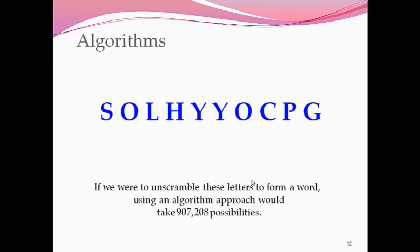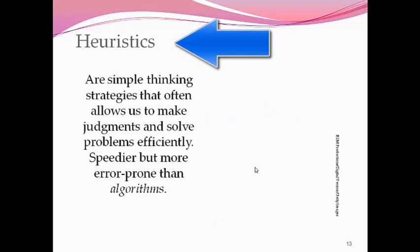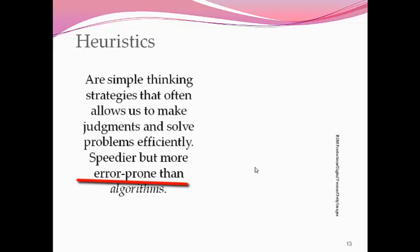So instead of using algorithms, human beings tend to rely on another problem-solving technique, another type of cognition or thinking strategy called heuristics. Heuristics are simpler strategies than algorithms. They allow us to make judgments and solve problems quicker and more efficiently. However, they are a little bit more error-prone than algorithms. We make more mistakes, but we use heuristics all day long - making decisions where to go, what to do, what to eat, should I study, should I ask a question. We tend to use heuristics a lot more than algorithms.